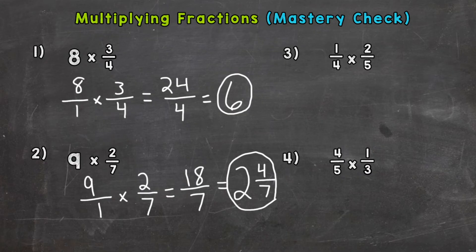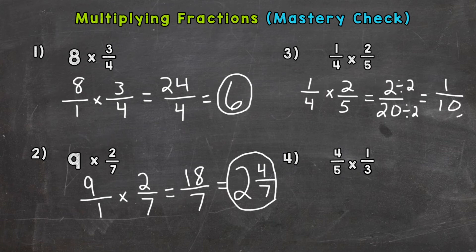Number 3, a fraction by fraction. So 1/4 times 2/5. Straight across, 1 times 2 is 2, 4 times 5 is 20. Now we have a greatest common factor between the two other than 1 and that common factor is 2. So let's simplify, divide both by 2 and we get 1/10. So you should have 1/10 for number 3.